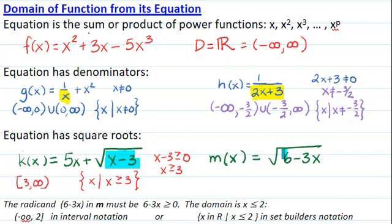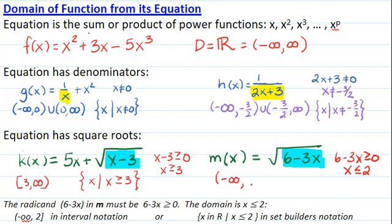In set-builder notation. In M, the radicand must satisfy 6 minus 3x greater than or equal to 0, or x less than or equal to 2. The domain of M is negative infinity comma 2, closed, if we want to write it in interval notation, or x such that x is less than or equal to 2 in set-builder notation.